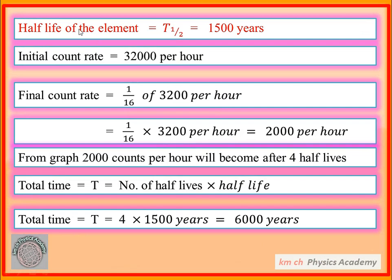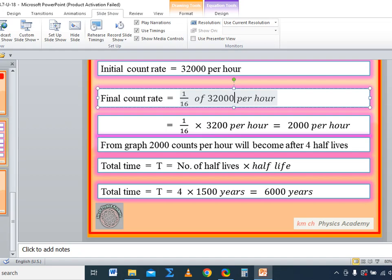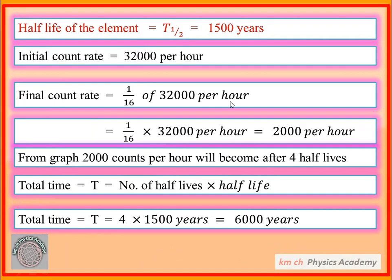The half-life of the element was given as 1500 years, and the initial count rate was 32,000 per hour. The final count rate is one over sixteen of 32,000 per hour. Dividing 32,000 by 16 gives 2,000 per hour. So the final count rate is 2,000 per hour. From the graph, 2,000 counts per hour is reached after four half-lives.